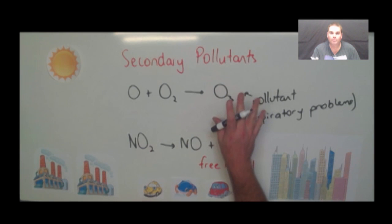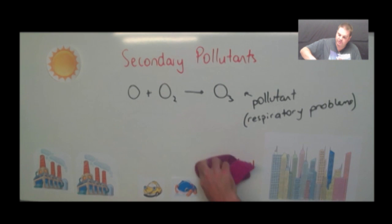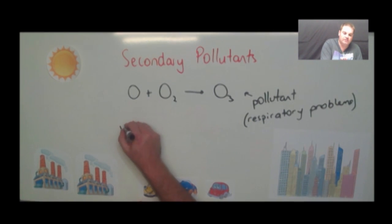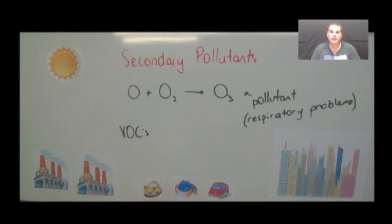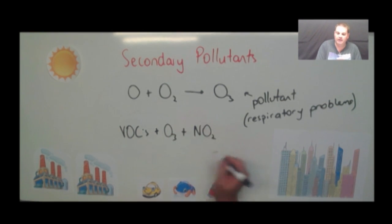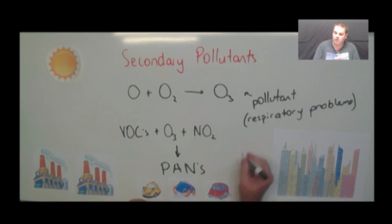So some of the secondary pollutants formed in the atmosphere via reactions are ozone and nitrogen dioxide. Now the third reaction produces a third secondary pollutant. We've got our ozone and our nitrogen dioxide, and we've also got our volatile organic compounds — unburned hydrocarbons. What happens is they combine with ozone and nitrogen dioxide to form something called PANs — peroxyacetyl nitrates. You don't have to balance this equation, but PANs are very, very dangerous — they are also pollutants and respiratory irritants as well.